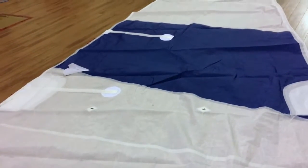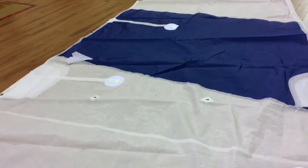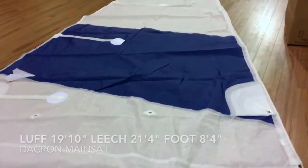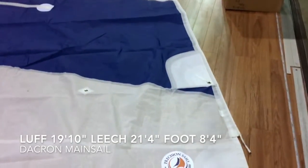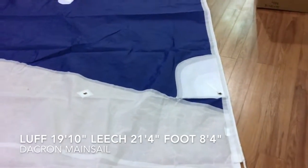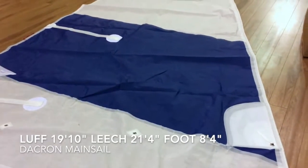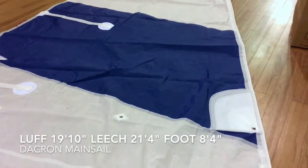We've got four partial battens and a reef point on this one. Let's take a look at these measurements - if this fits your rig, this would be a great buy. We've got a luff length here of 19 feet 10 inches.